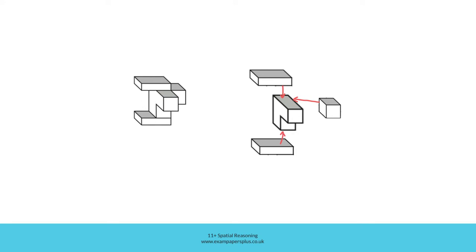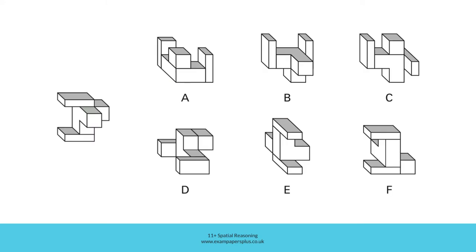We can now reconsider those six answer options, bearing in mind the relationships between all of the blocks. Beginning with option A: although the relationship between the cube and the L-shaped block appears correct, it's the relationship between the two cuboids which is wrong. Remember, they are parallel to one another. In A, they are not parallel — they would in fact meet at right angles. So A must be incorrect.